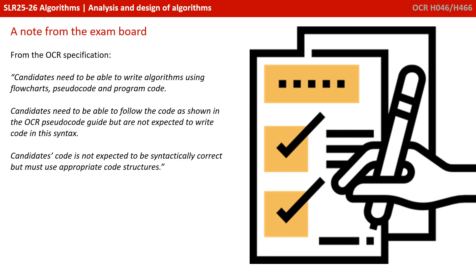A quick note from the exam board. Candidates need to be able to write algorithms using flowchart, pseudocode, and program code. Candidates need to be able to follow the code as shown in the OCR pseudocode guide, but are not expected to write code in this syntax. Candidates' code is not expected to be syntactically correct, but they must use appropriate code and structures.